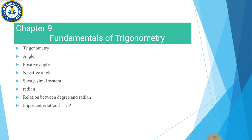Moving on towards Chapter 9: Fundamentals of Trigonometry. The things we are going to learn are: trigonometry, angle, positive angle, negative angle, sexagesimal system, radian, relation between degree and radian, and the important relation L is equal to r theta.